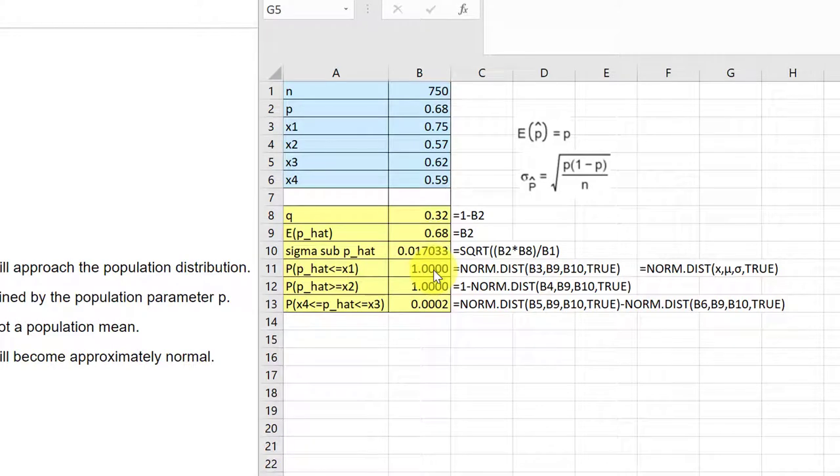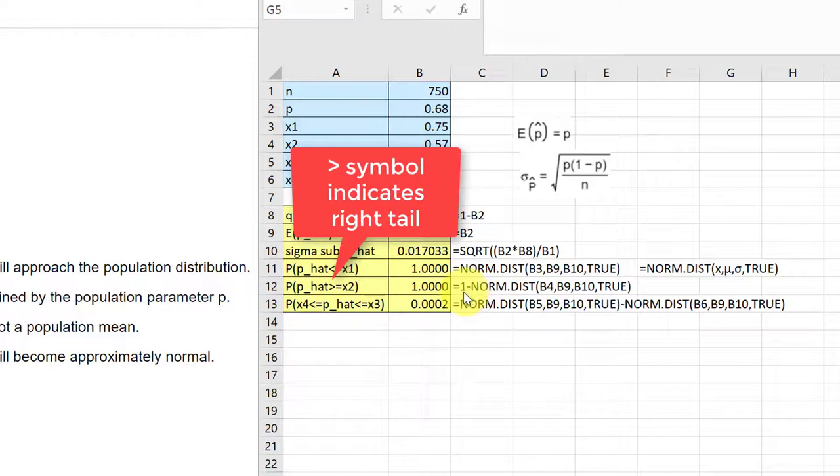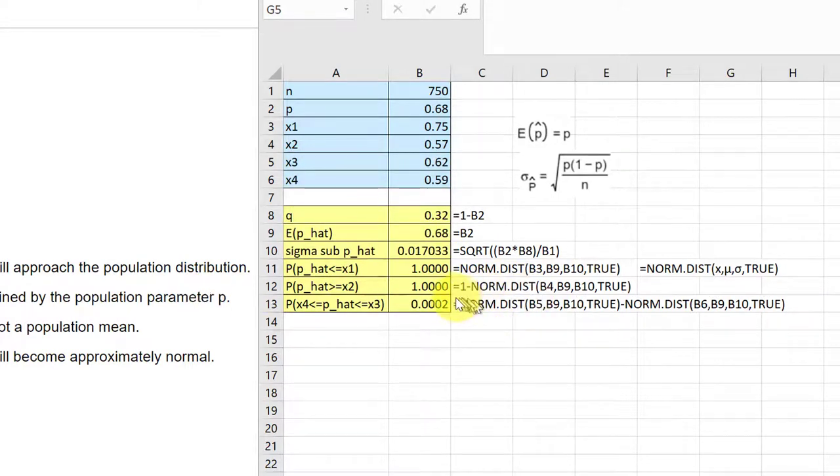The other question is the probability of greater than x2, x2 being 0.57. In this case we want the right end of the probability distribution, normal distribution. So we use one minus. We subtract that left tail from the overall distribution to get the right tail. But again, this is so extreme that it is approximately one.